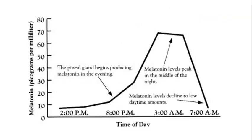This chart depicts melatonin concentrations on the vertical axis and time of day on the horizontal axis. We see that melatonin release is not consistent throughout the day, but instead it rises and falls depending on the time. Starting on the left side of the graph, melatonin levels tend to be very low in the middle of the day. As evening approaches, the gland begins secreting more melatonin, and peak melatonin secretion occurs in the middle of the night, around 3 a.m. It will then drop off quickly as dawn approaches.